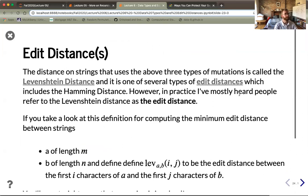I should give a caveat. The distance on strings using these three types of mutations is actually called the Levenstein distance, named after a Russian mathematician from the mid 20th century. It is one of several types of edit distances. We've already included the Hamming distance. You might think of transposition as another operation, counting as one move rather than two substitutions. For whatever reason, when I've operated as a researcher, people generally refer to the Levenstein distance as the edit distance, and our book CS for All does the same.